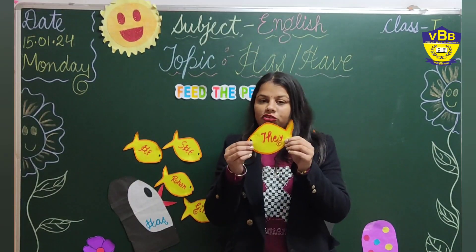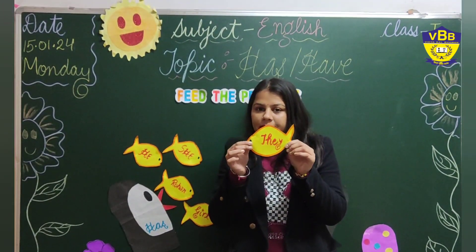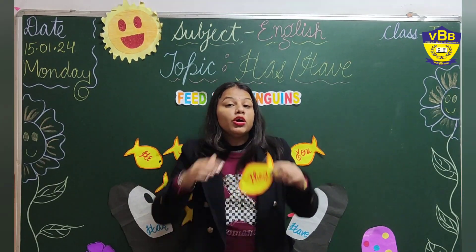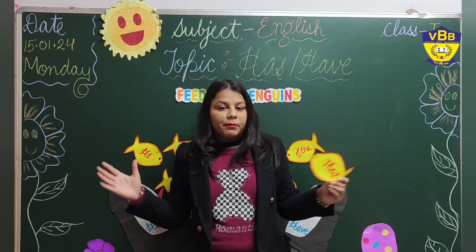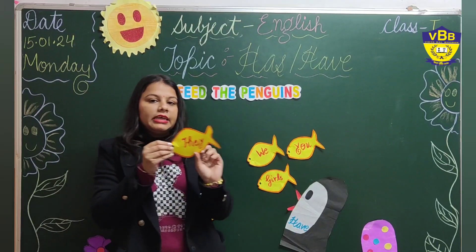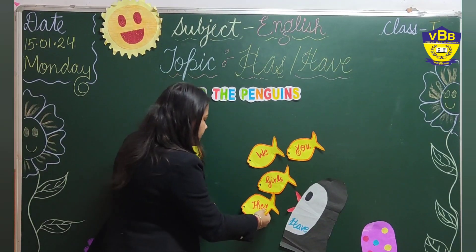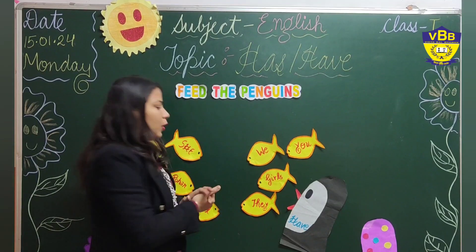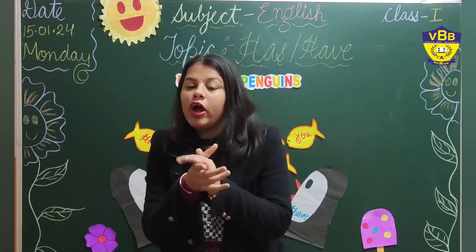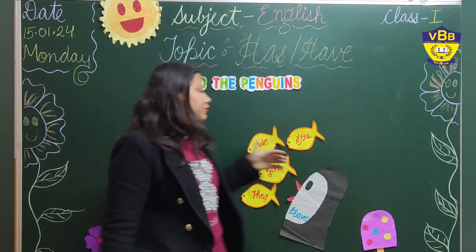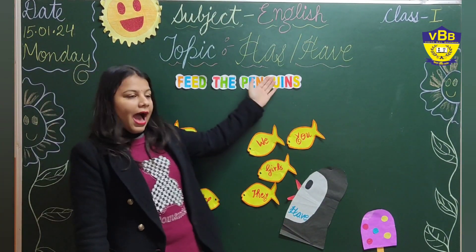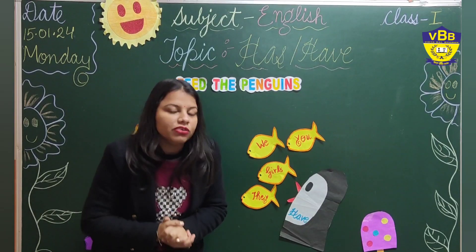Now let's move to another word. Which fish is this? What is written here? 'They.' They means we are talking about so many people. So that is why the 'have' penguin will eat 'they.' I hope you all enjoyed this activity and through it the concept of has and have is clear to you.